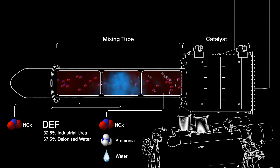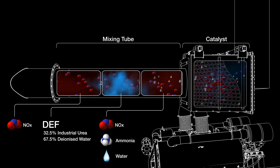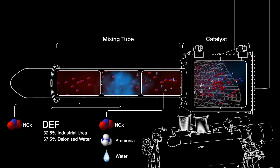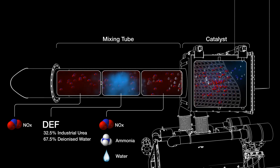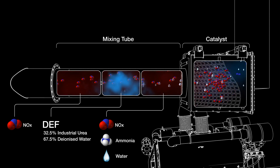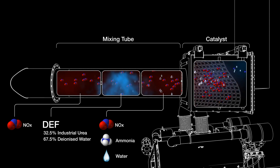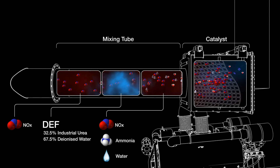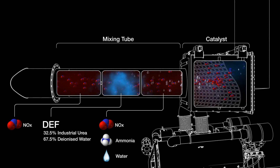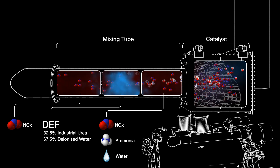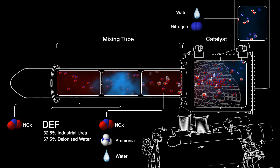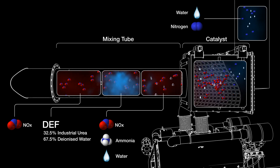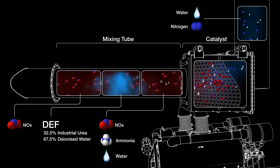Another reaction now occurs between the ammonia and the vanadium coating applied to the inside of the catalyst. The ammonia reacts with the nitrogen oxides, trapping them inside the catalyst. And harmless water and nitrogen are all that remains as the gases are released into the atmosphere.